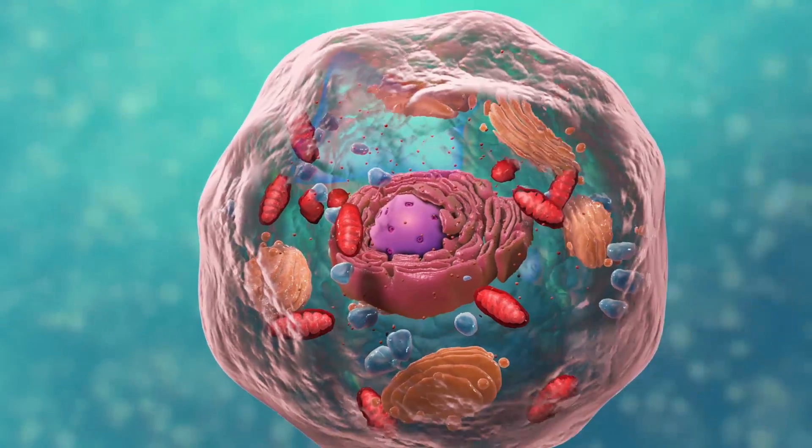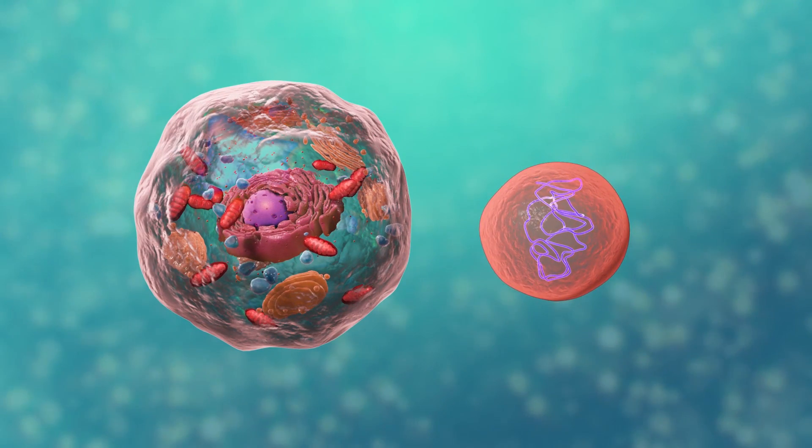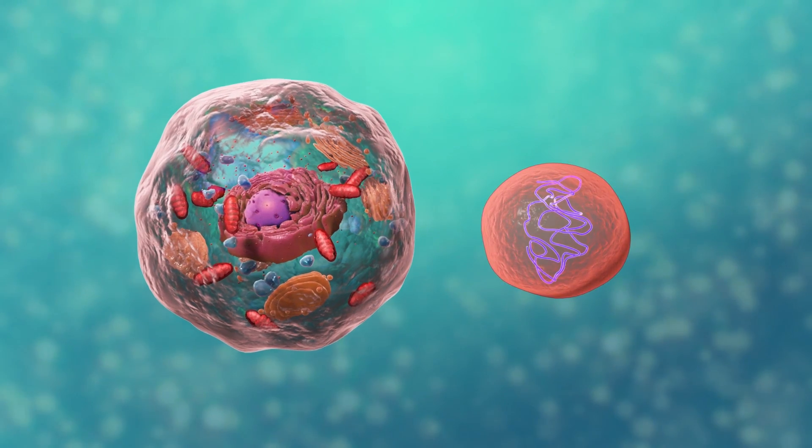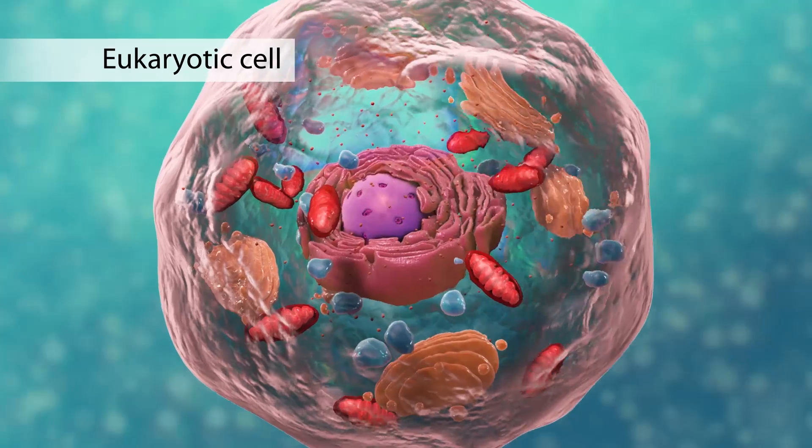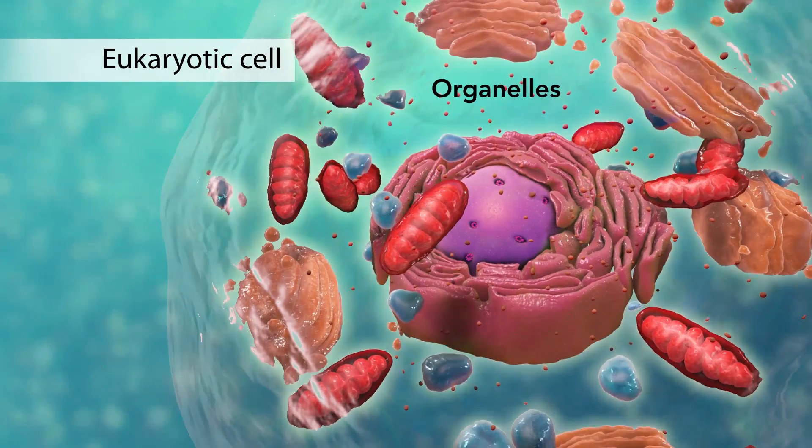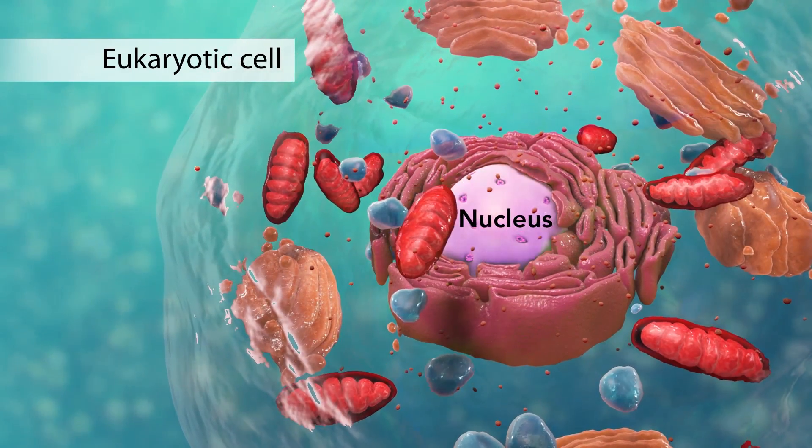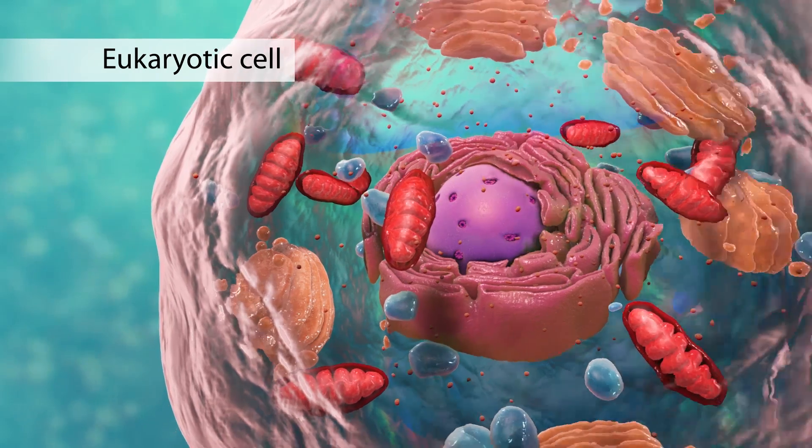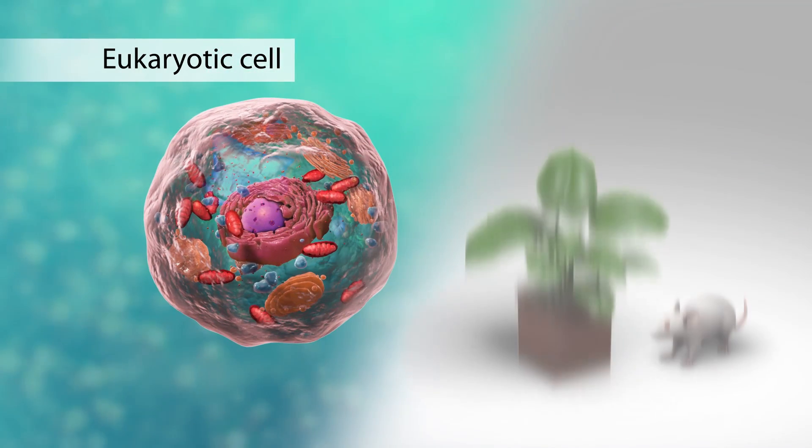You also need to know that there are two broad categories of cells. The first category is eukaryotic cells. They have organelles, which include the nucleus and other special parts. Eukaryotic cells are more advanced, complex cells.